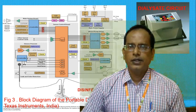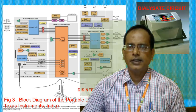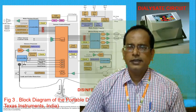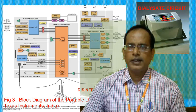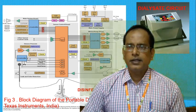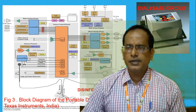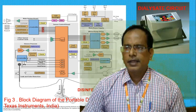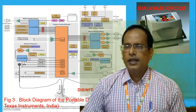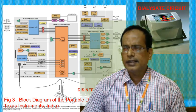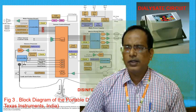Next is the disinfection circuit, which is another part of the portable dialyser. After the dialysis process is complete, the machine must be cleaned and sterilized. Provisions are made in the plumbing to close the circuit into a loop and run saline and sterilized water through the system to flush away all impurities.